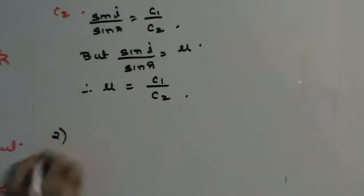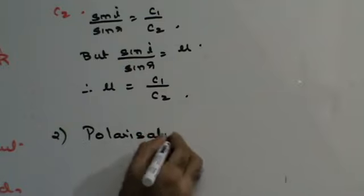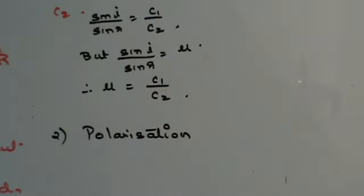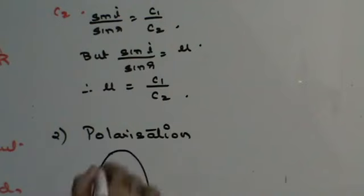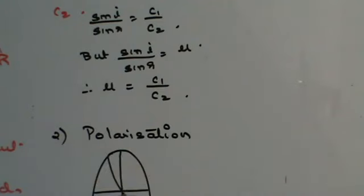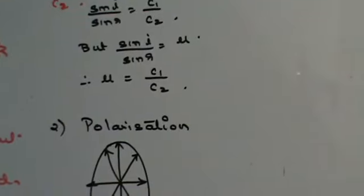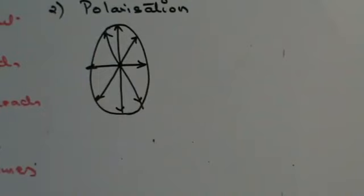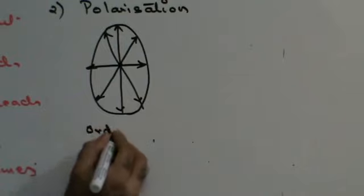Now let's come to another concept called polarization. Let's first consider ordinary light. This is how ordinary light moves. If ordinary light is going into a board — if this is the point where the ordinary light is moving — this is how it is going to cause disturbance in all directions. An ordinary light would cause disturbance in all directions. This is how my ordinary light would look like.